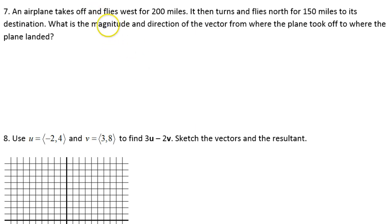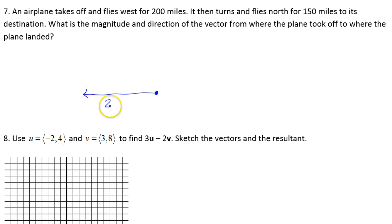The plane flew west for 200 miles, so let's say this is the takeoff point. It flies west for 200 miles, so that would be something like this. And then it flies north for 150 miles, so that would be like this. They want the magnitude and direction for the overall trip, which would be like this.